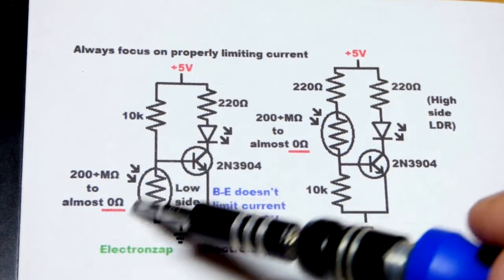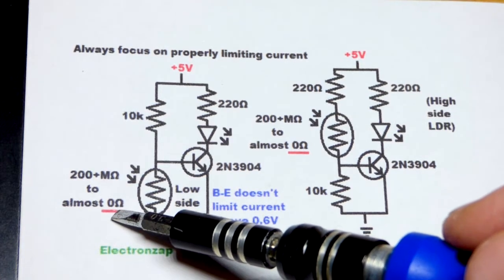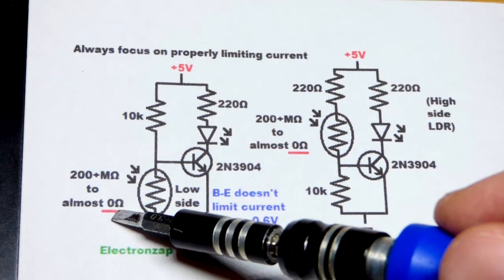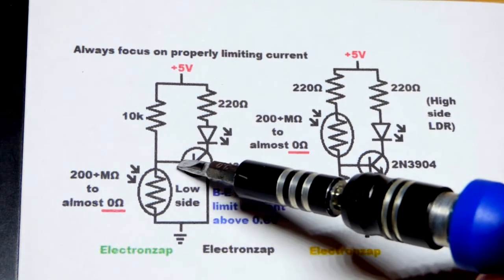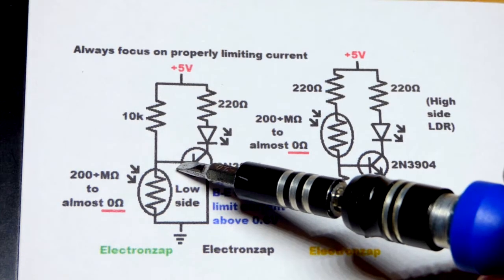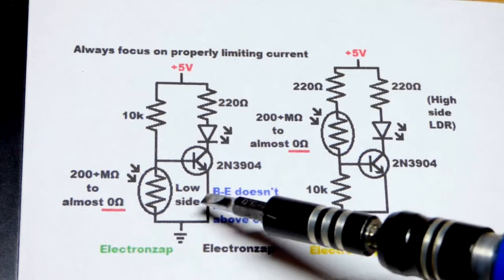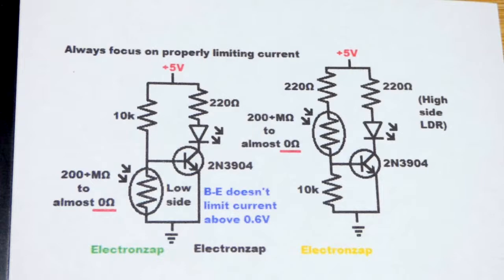When it gets bright enough so the light-dependent resistor gets close to zero volts, maybe it's 30 or 40. I haven't tested in sunlight, but I got it pretty bright, down to about 30 ohms of resistance. You have a connection to ground to the base there pretty directly. And that just turns everything off. No current flows through the transistor at that point. So you don't have to worry about high current over there.